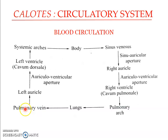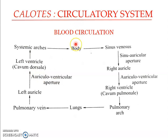From the lungs, oxygenated blood returns through the pulmonary vein to the left auricle, then through the left auriculo-ventricular aperture into the cavum dorsale, and from the cavum dorsale to the left and right systemic arches to be distributed to the body. This is known as double circulation because blood flows between the heart chambers and the lungs, and simultaneously between the heart chambers and the various body parts.